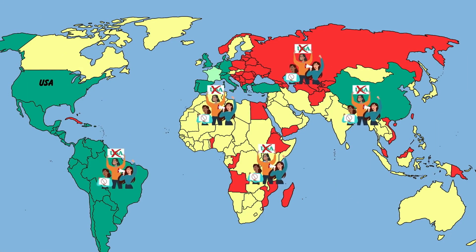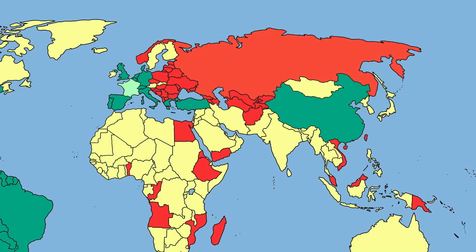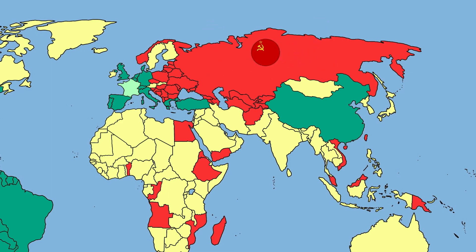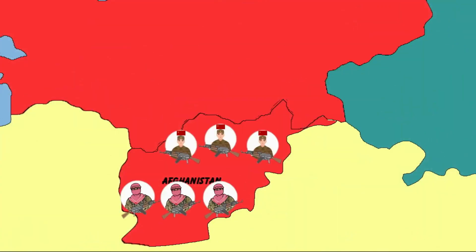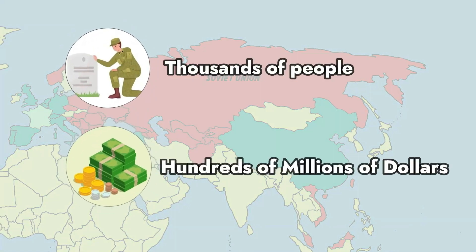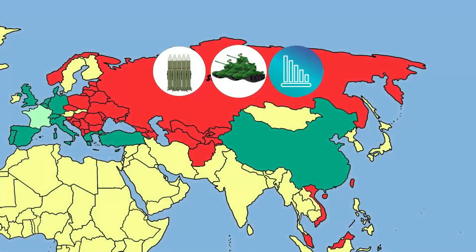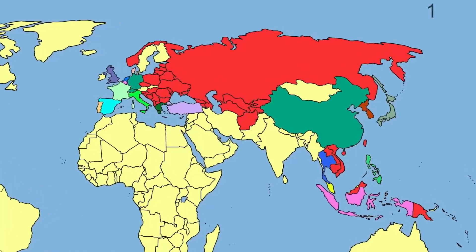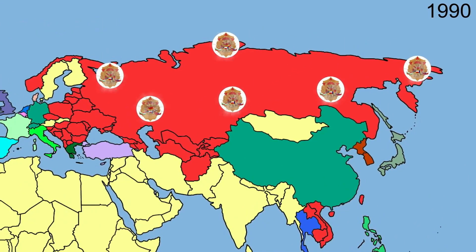The Soviet Union was weakening due to spending too much on the military budget and began to run out of money. It decided to stop funding communist movements in Africa and withdraw all troops from Afghanistan. The Soviet war in Afghanistan is likened to America's war in Vietnam, as it cost thousands of lives and hundreds of millions of dollars, significantly weakening the military power and economy of the Soviet Union.